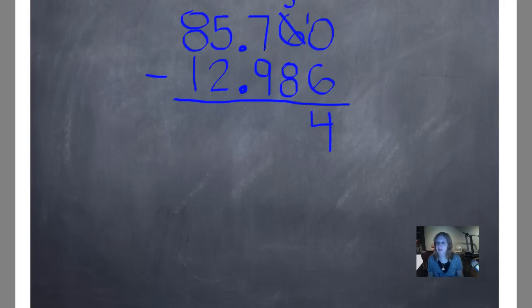10 minus 6 is 4. 5 minus 8. Can't do it. 15 minus 8 is 7. 6 minus 9. Wow. Can't do it. 16 minus 9 is 7. 4 minus 2. We can do that. Is 2. And 8 minus 1 is 7. So we're drawing a box around it and putting an arrow there so we don't forget that's our answer.